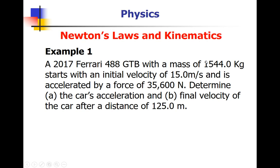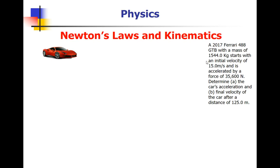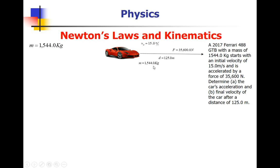Well, a 2017 Ferrari 488 GTB with a mass of 1,544 kilograms starts at an initial velocity of 15 meters per second. It is accelerated by a force of 35,600 newtons. Determine the car's acceleration and the final velocity of the car travels a distance of 125 meters. Read it. After I read it, the next thing I always do is... Sure, that Ferrari hopping down the road. A mass of 1,544 kilograms starts at 15 meters per second with an applied force of 35,600 newtons over a displacement of 125 meters. Read it. Diagrammed it. After I diagram it, I... My mass of... Should be 1,544 kilograms. An initial velocity of 15 meters per second. A force applied of 35,600 newtons for a displacement of 125 meters. What's the acceleration and the final velocity?